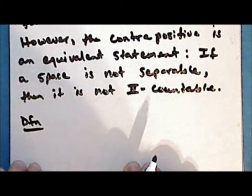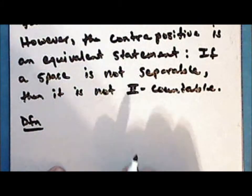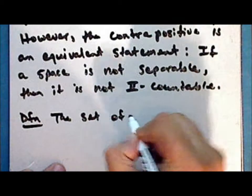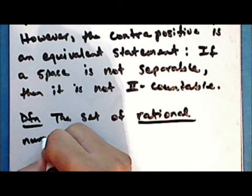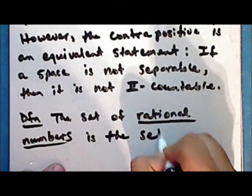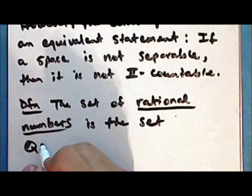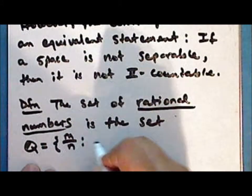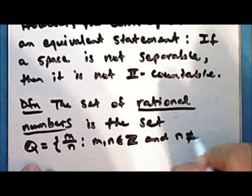So we are going to begin to look at the order topology on the rationals. We need to define what we mean specifically by the rational numbers. The set of rational numbers, denoted by the blackboard bold letter Q, is the set of all ratios m over n, where m and n are integers and the integer n is not zero.